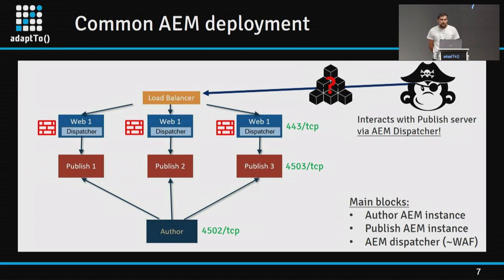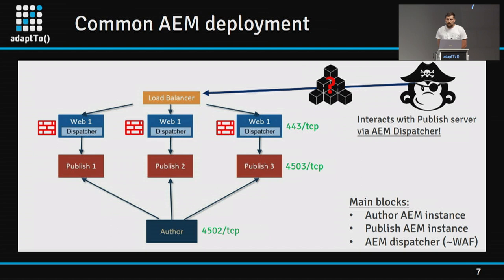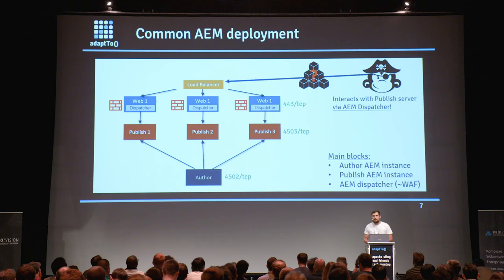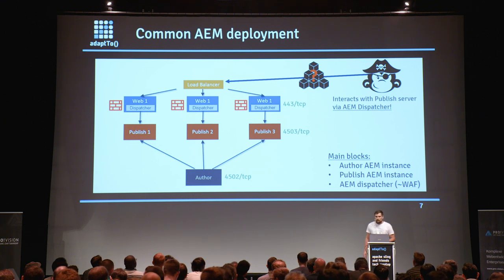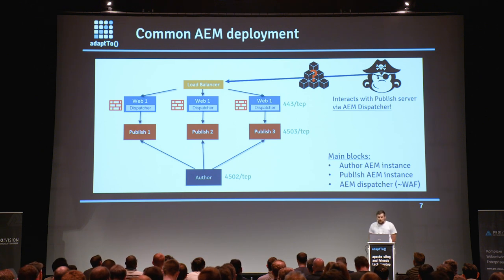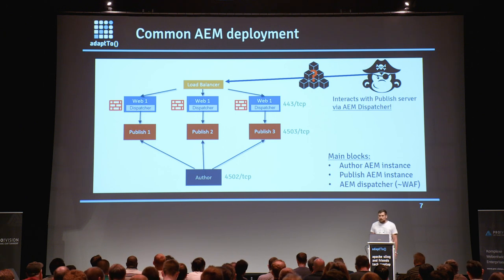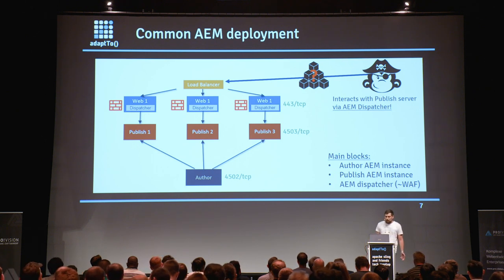Just a quick recap of a typical IAM deployment scenario. In a common IAM deployment, there are three main components: the author instance, publish instance, and dispatcher. The author instance is placed deep inside the backend network and is not visible from the internet. Content is published on the author instance and through replication mechanisms it propagates to publish instances, where users normally communicate through the IAM dispatcher.